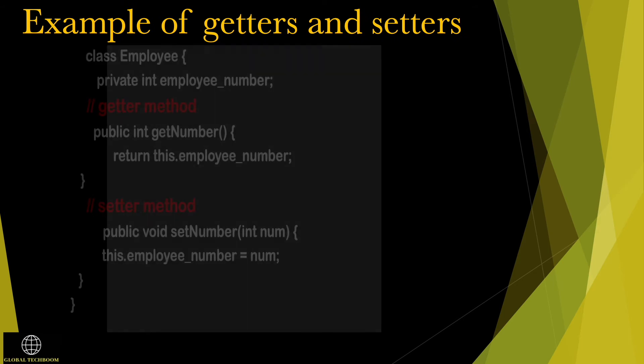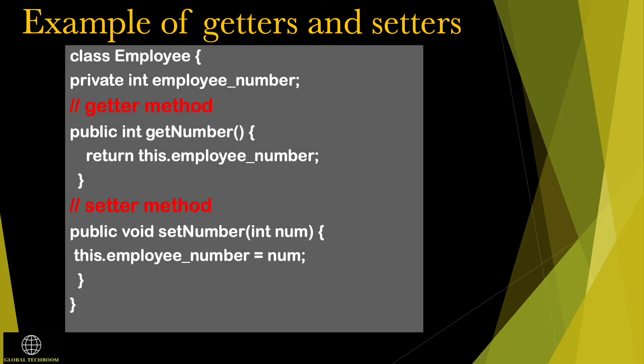In this example, the getNumber method is a getter method that reads the value of the variable employee number. The setNumber method is a setter method that sets or updates the value for the variable employee number.